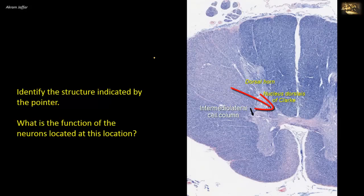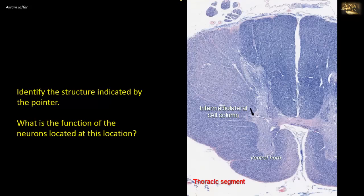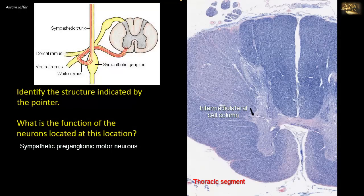This is a thoracic segment of the cord. Identification of the level as thoracic is supported by the presence of the lateral horn and the narrow ventral horn, where only the medial nuclear group of anterior horn cells is found — there is no lateral group because there is no limb to supply at this level. The lateral extension of the anterior horn is present in the cervical region for the upper limb and in the lumbosacral region for the lower limb. The intermediolateral cell column consists of sympathetic preganglionic motor neurons, whose axons exit with the ventral root and leave via the white ramus communicants to enter the sympathetic trunk.